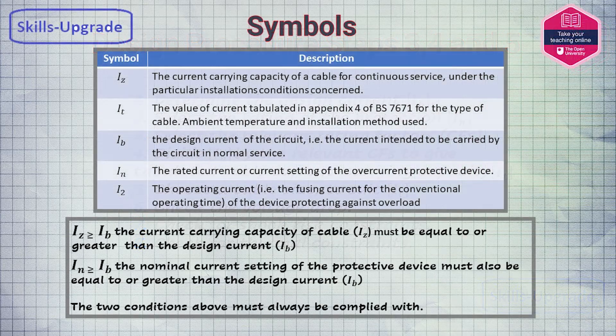There are different definitions regarding current. IZ is the current carrying capacity of a cable for continuous service — the value of current tabulated in Appendix 4 of BS7671 with the type of cable, ambient temperature and the installation method used.